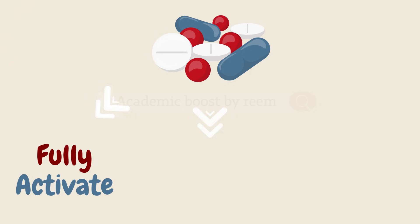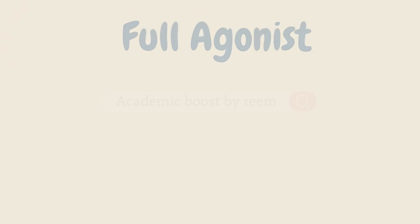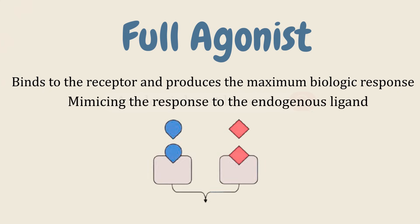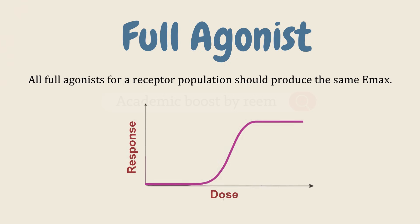Full agonists bind to the receptor and produce the maximum biological response possible by mimicking the response to the endogenous ligand. All full agonists for a receptor population should produce the same Emax, and its intrinsic activity equals one, which is the highest response to be achieved.